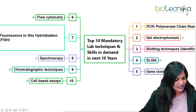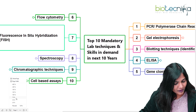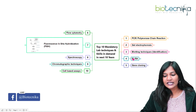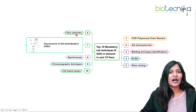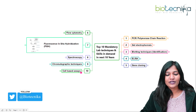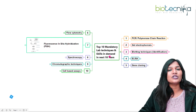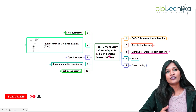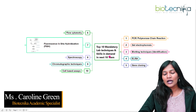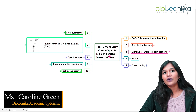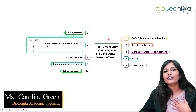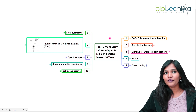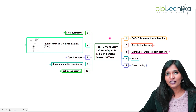To summarize, the top 10 mandatory lab techniques are: PCR, gel electrophoresis, blotting techniques, ELISA, gene cloning, flow cytometry, FISH, spectroscopy, chromatography, and cell-based assays. These are among the most important techniques that will remain in great demand even after 10 years. Whether you are a fresher, completing your masters, looking for a job, or entering research, I recommend learning all of these. Thank you for your time and see you in another video.